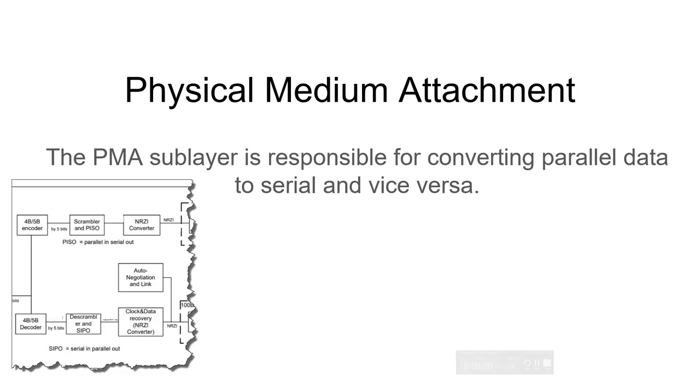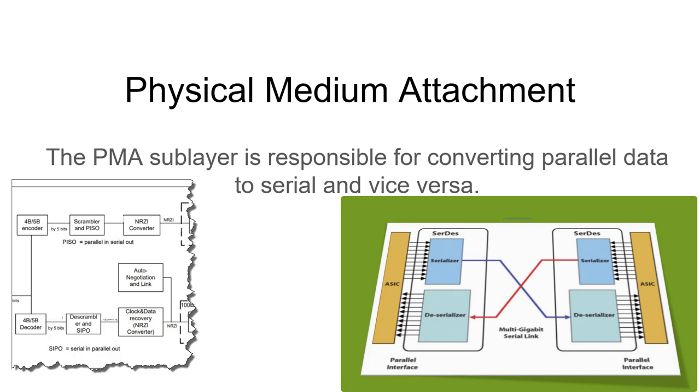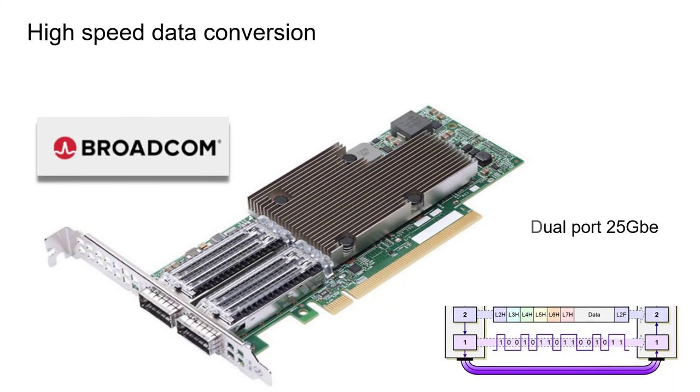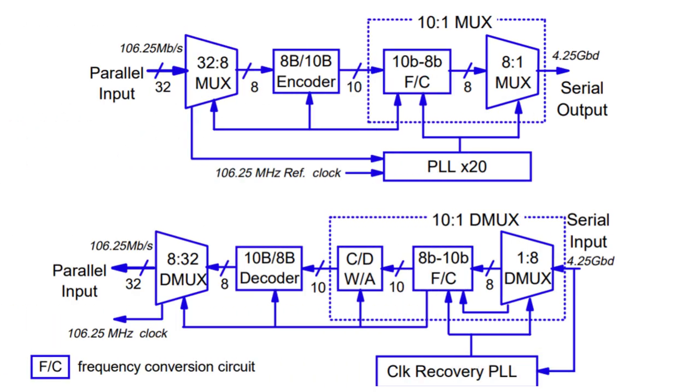The physical medium attachment, or the PMA sublayer, is responsible for converting parallel data to serial and serial to parallel. You can only look at a card like this. This is a server-based network card running at 25 gigabits at each port. And you are stunned at the complexity of trying to do such a thing, as take 25 gigabits of parallel data, convert it into serial streams, and vice versa. The signal processing that goes on in these kinds of cards is just mind-blowing. Here's a block diagram of some of the circuitry that is used to create this serial to parallel and parallel to serial. It is incredibly complex.